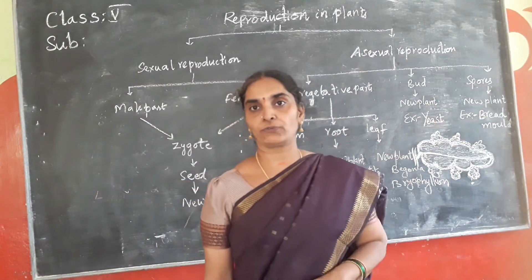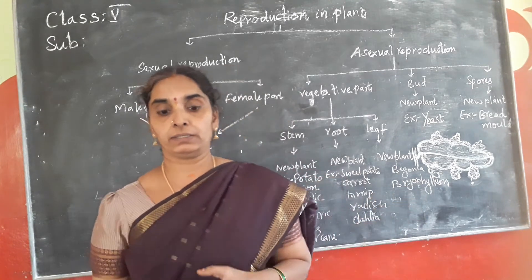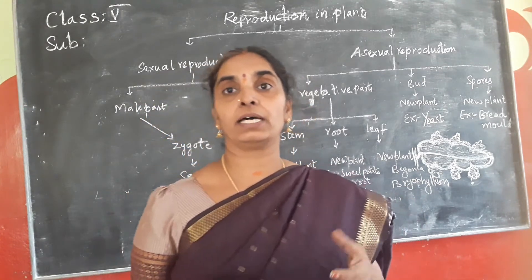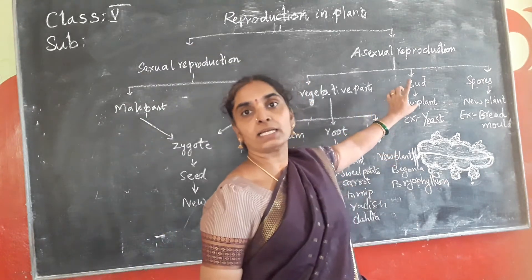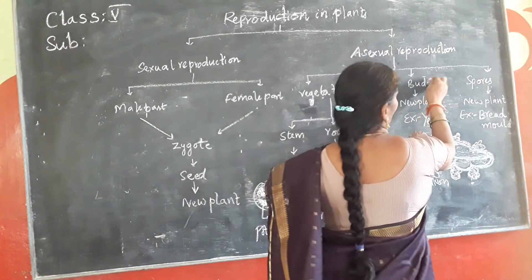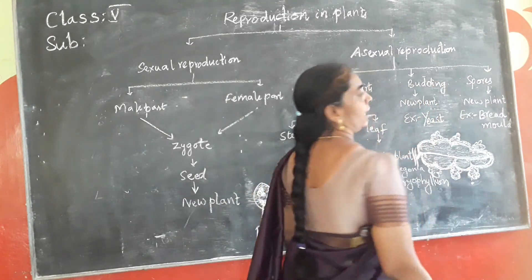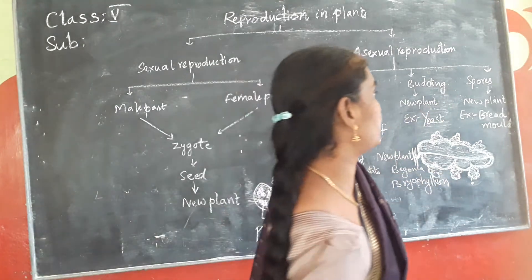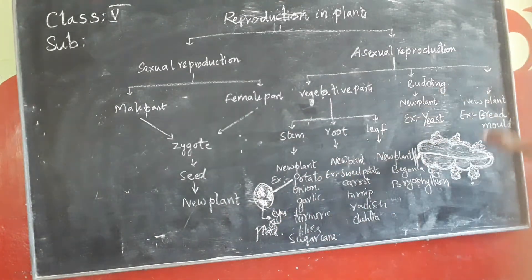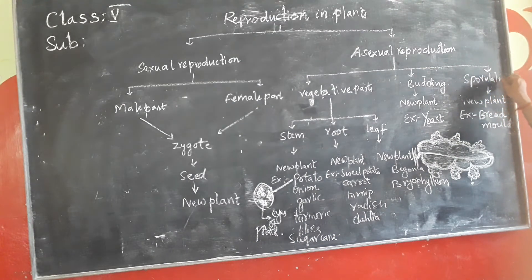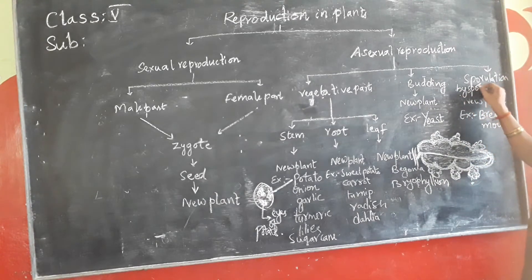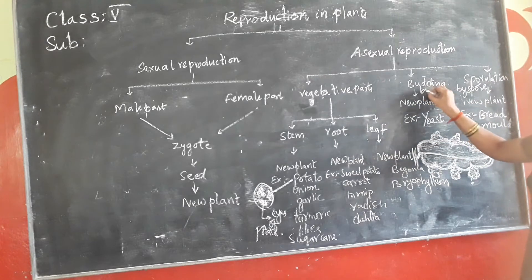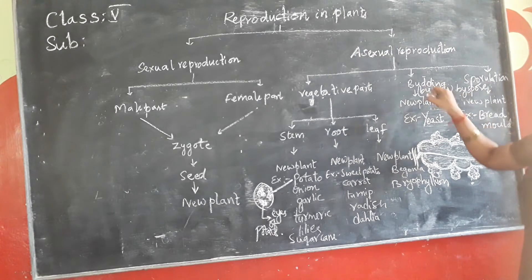Now coming to budding and spore formation. These are also types of reproduction where there are no male and female parts. New plants arise through bud formation — this is called the budding process. Reproduction through spore formation is called sporulation.